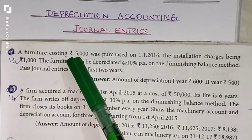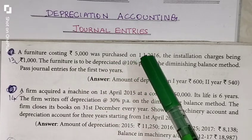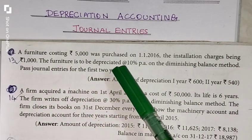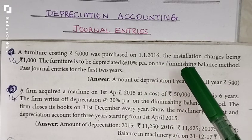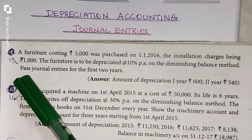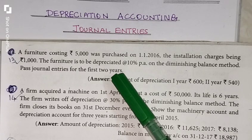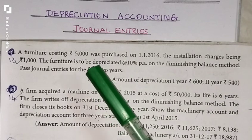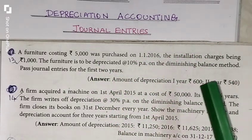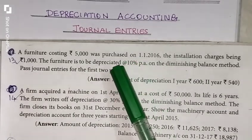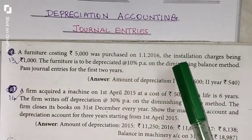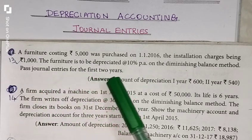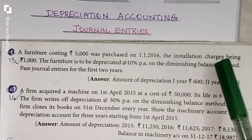The furniture costing Rs. 5,000 was purchased on 1-1-2016, with installation charges of Rs. 1,000. The furniture is to be depreciated at 10% per annum on the diminishing balance method. We have to find the journal entries for the first 2 years, given the purchase date 1-1-2016 and installation charges Rs. 1,000.